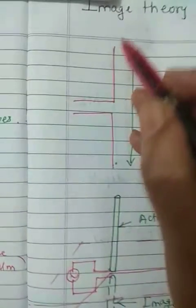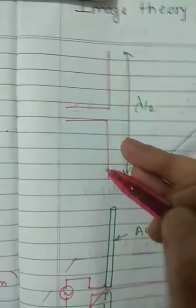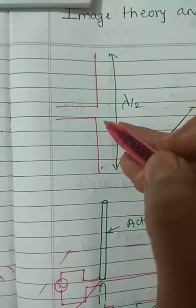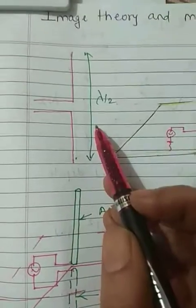In dipole antenna, two poles or two conductors are used. Now dipole antennas are used in HF and VHF communication.